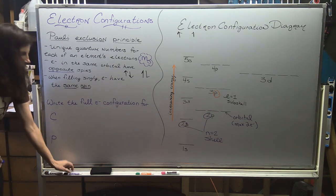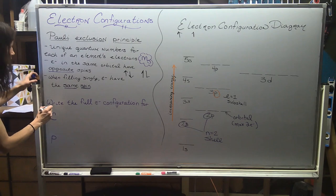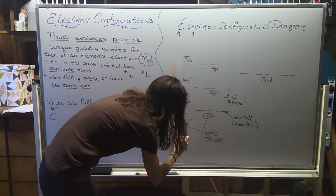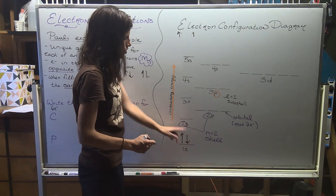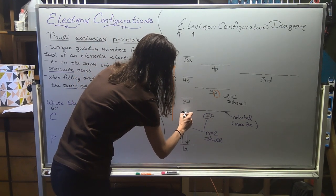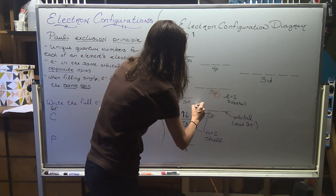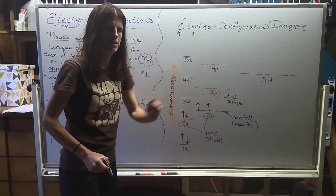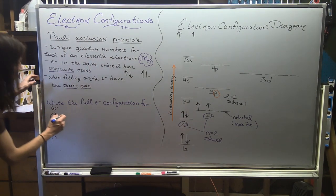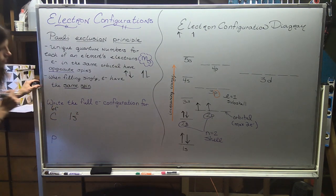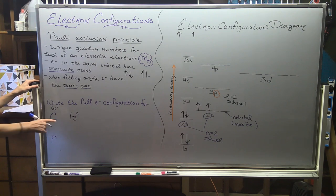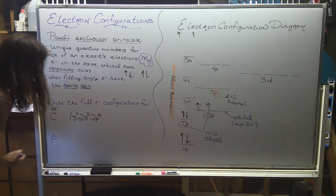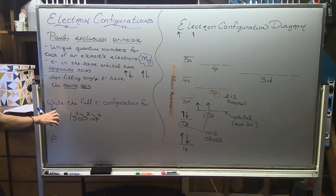Let's do the electron configuration for carbon, which has 6 electrons. Starting at the bottom, I put the first 2 electrons in 1s with opposite spins. Then the next 2 go into 2s. Then in the 2p subshell I do single filling with the same spin for electrons 5 and 6. The written configuration is 1s² 2s² 2p². The exponent represents the number of electrons in that subshell. Adding the exponents — 2+2+2 — confirms 6 total electrons.